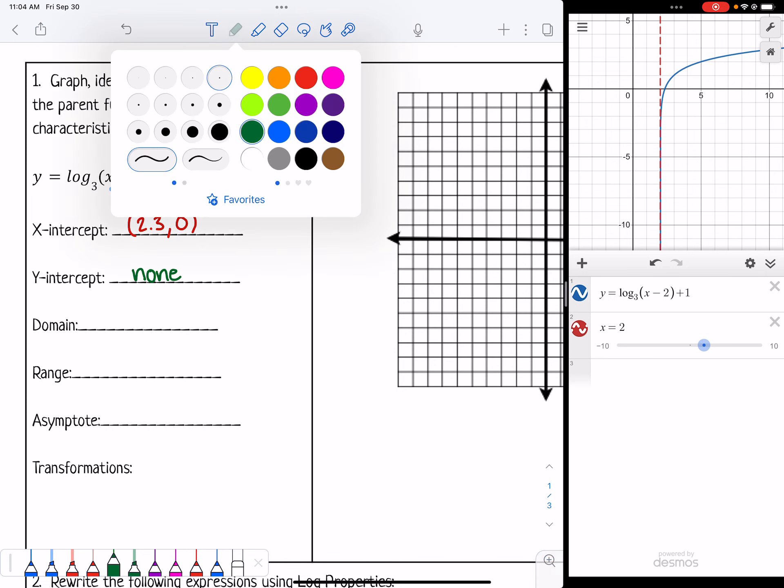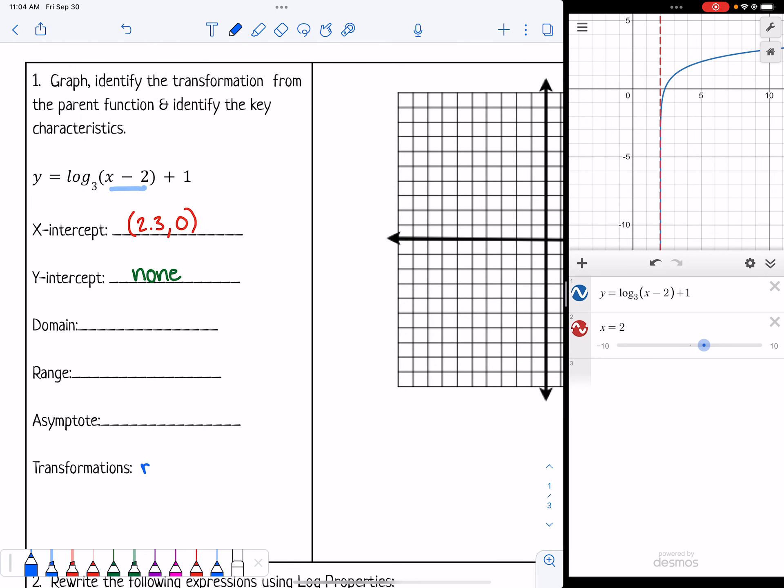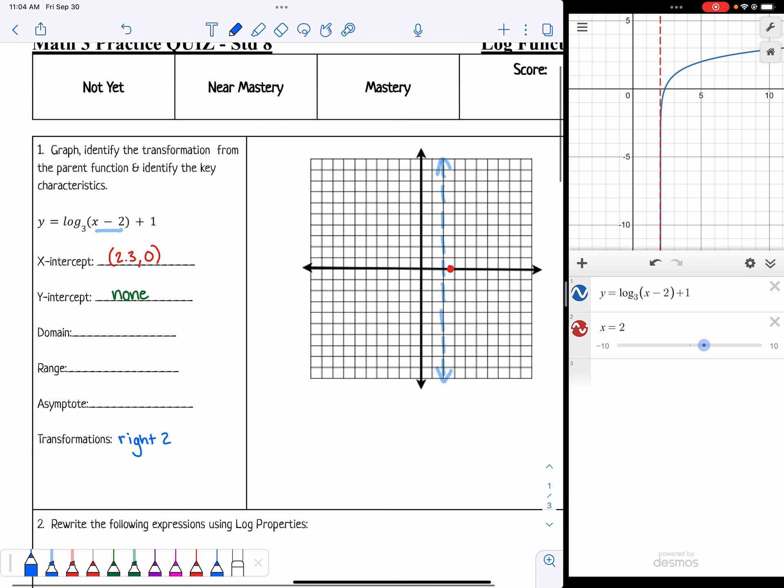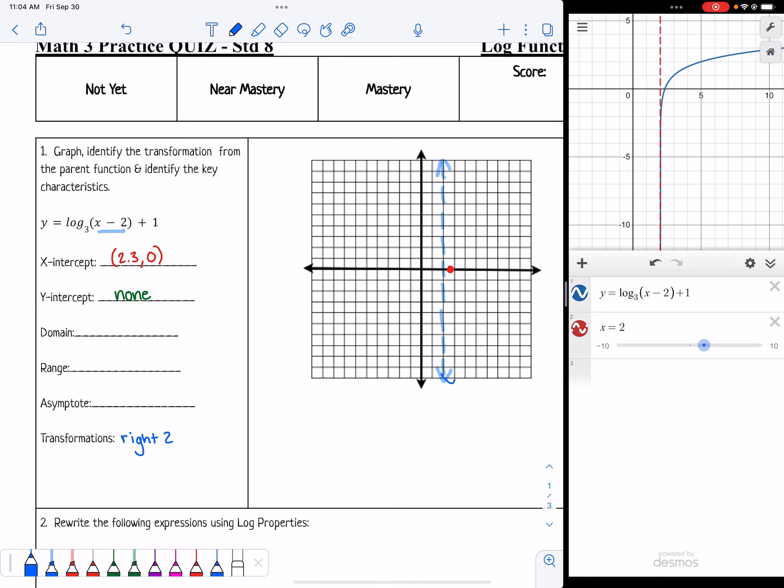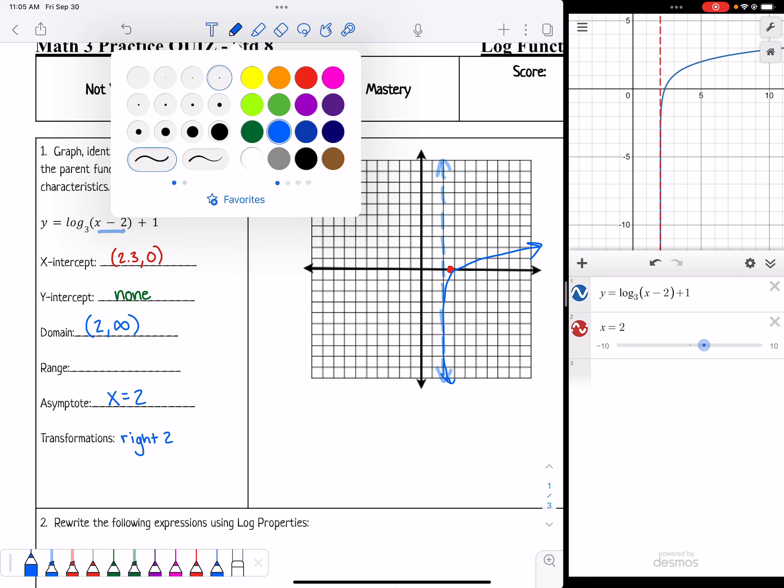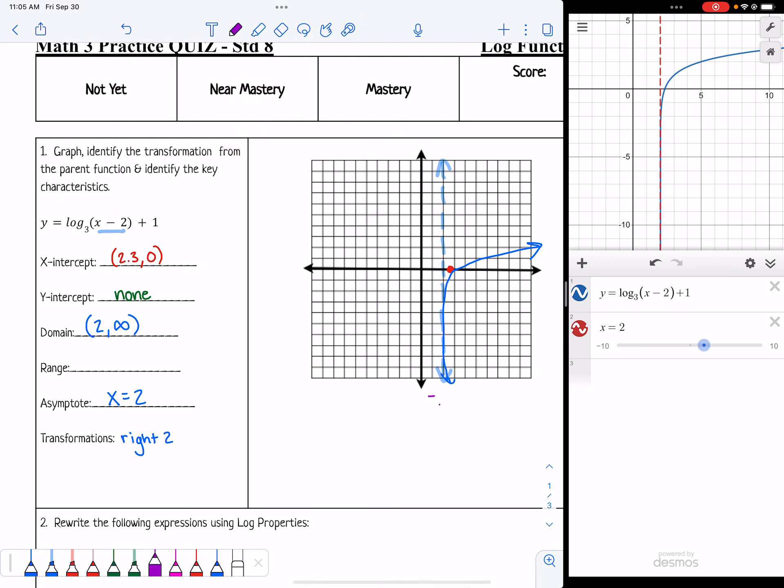Let's connect all those things. It went right 2, so that's a transformation that occurred. When it goes right 2, it's going to cause the domain to start at 2 and then go to the right forever, but it won't go any further to the left past 2. 2 is as far left as it'll go. The asymptote is also connected to all those things. So right 2, the domain starts with 2, and the asymptote is at x equals 2.